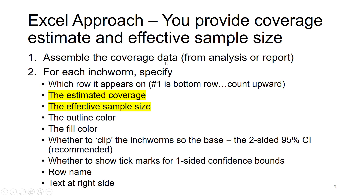In the first example — the Harmonia example — let's say we know from an old report: we know estimated coverage and effective sample size for each stratum, and so we're going to plot those things. We provide those in Excel. For each inchworm, we also provide some other information: which row do we want it to appear on (row number one is the bottom row and we count upward), what color we want the outline of the shape to be, what color we want the fill to be, whether we want to clip those inchworms so that the base of each shape corresponds exactly to the two-sided 95% confidence interval (that's the recommendation, though it's optional), whether to show tick marks for the one-sided confidence bands, what to name the row, and what text should go on the right.